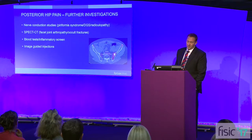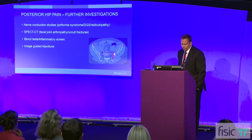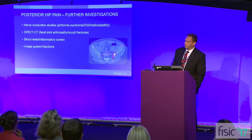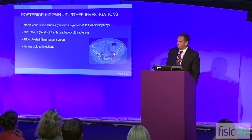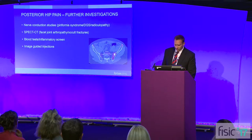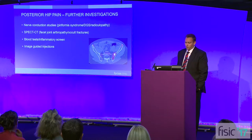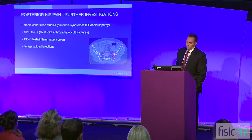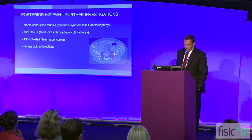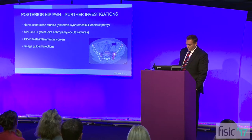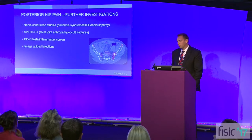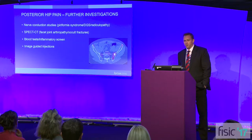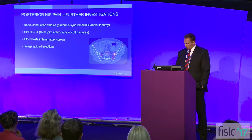SPECT CT is extremely helpful if you have it available, and this will pick up occult fractures and sacroiliac joint inflammation which can sometimes be missed. If one is struggling, blood tests and inflammatory screen — don't forget inflammatory arthropathy as an issue. And if the patient has multiple comorbidities, then image-guided injections can sometimes help unpick what is what.